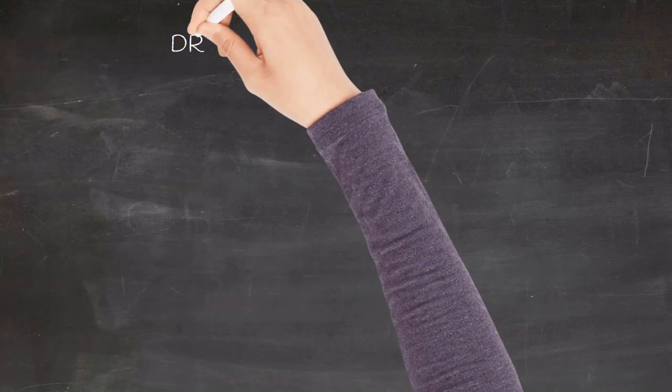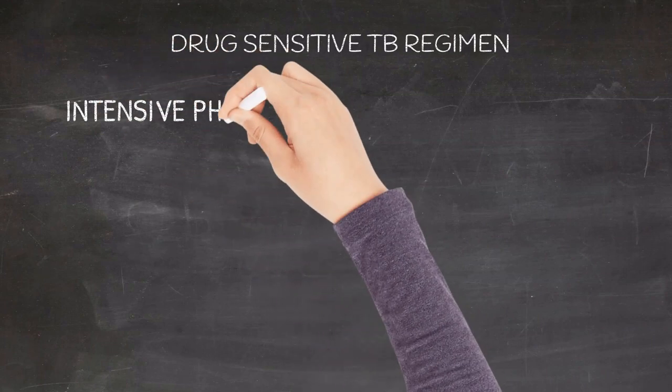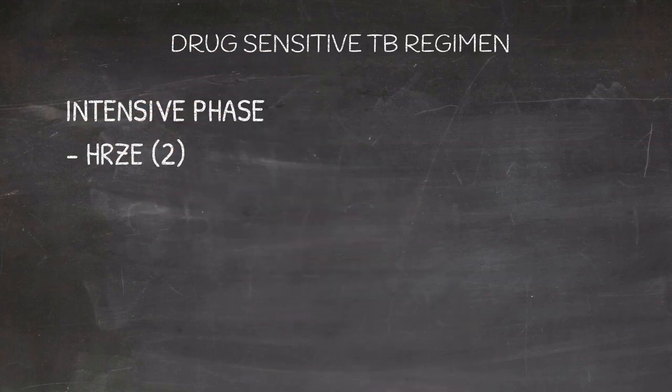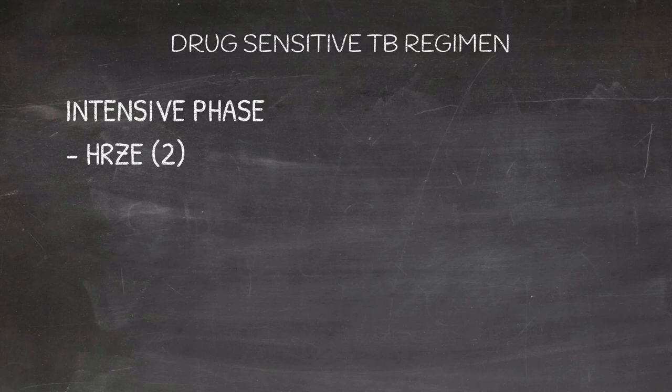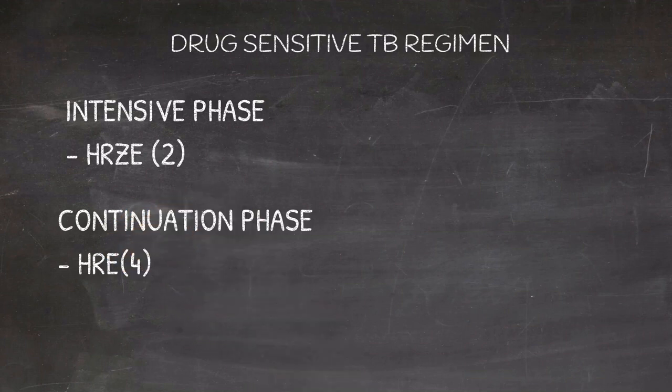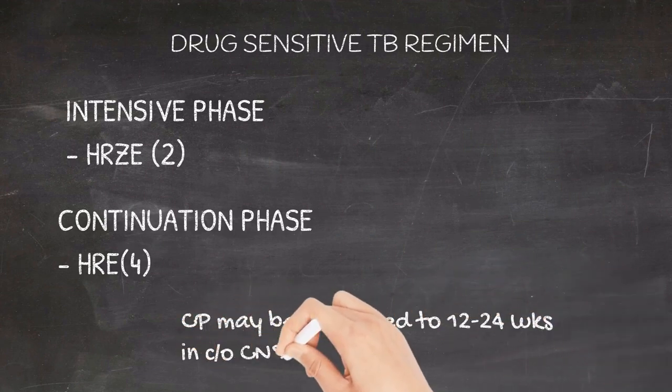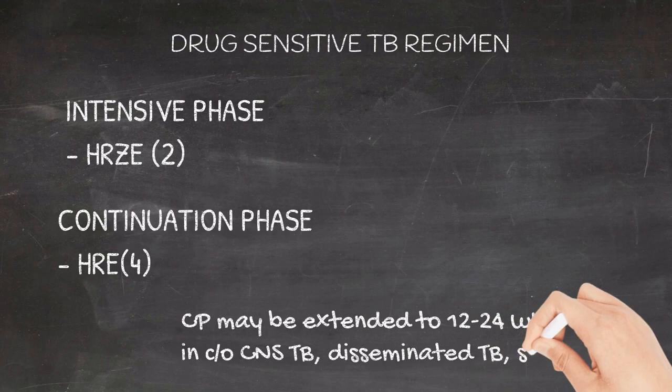Let us look into the management of drug sensitive tuberculosis. The intensive phase includes isoniazid, rifampicin, pyrazinamide and ethambutol. All of these drugs are given for a period of two months as fixed dose combination on a daily basis. In the continuation phase, pyrazinamide is removed. That is isoniazid, rifampicin and ethambutol is continued for a period of four months. The continuation phase may be extended to 12 to 24 weeks in case of CNS disseminated or skeletal tuberculosis based on the clinical judgment.